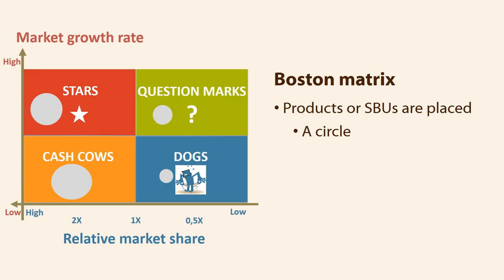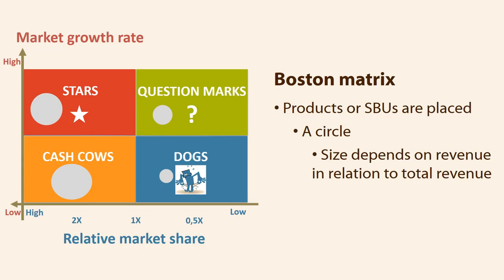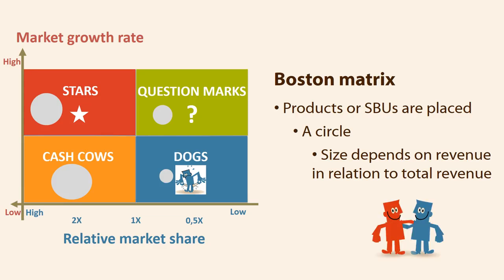The position of the company's product is marked with a circle. The size of the circle depends on how much revenue is in the business area in relation to the company's total revenue. The following review of the four fields indicates the typical process that a product or product group can go through in its lifetime. The path that most companies are trying to achieve is: question marks, stars, cash cows, ending with dogs.